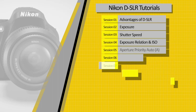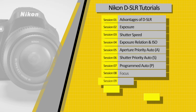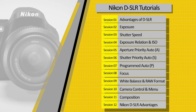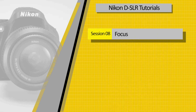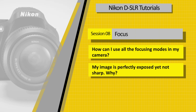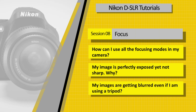Thank you for joining us. How can I use all the focusing modes in my camera? My image is perfectly exposed yet not sharp. Why? My images are getting blurred even if I am using a tripod.